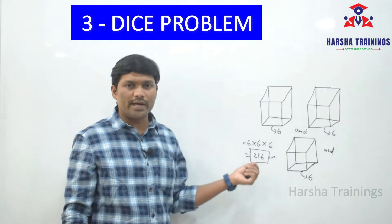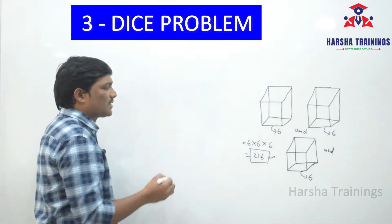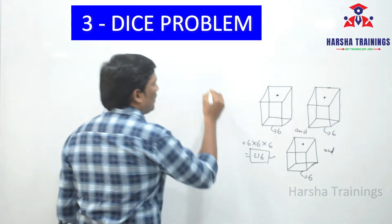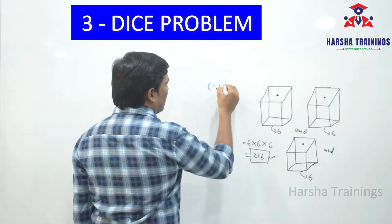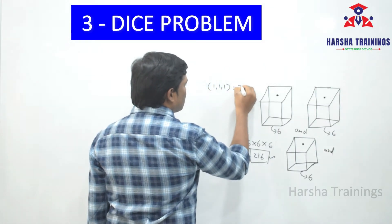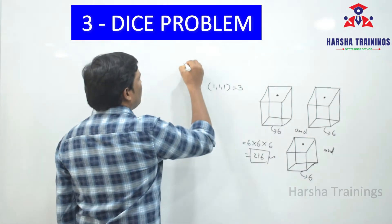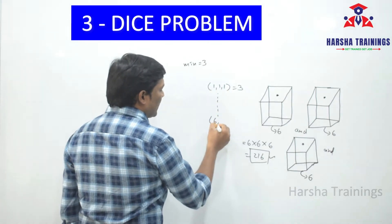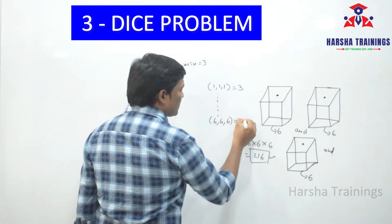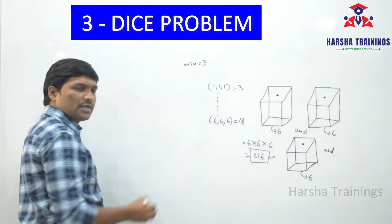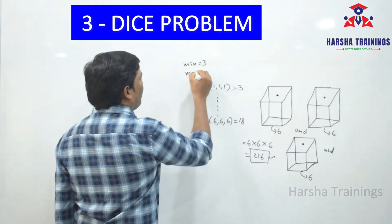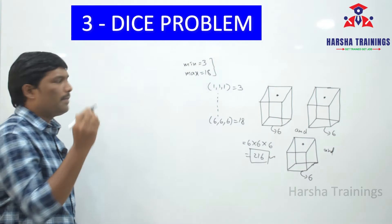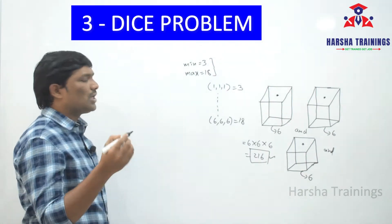For example, three dice are thrown: the first die getting 1, second die getting 1, third die getting 1 — the sum is how much? Three. So minimum sum is three. And first die getting 6, second die getting 6, third die getting 6 — the sum is 18. So maximum sum is 18, minimum sum is 3.